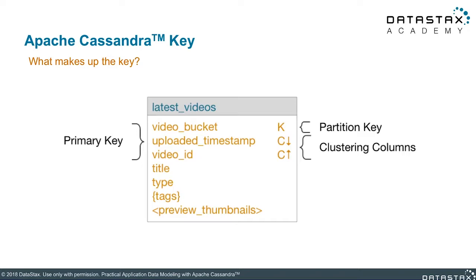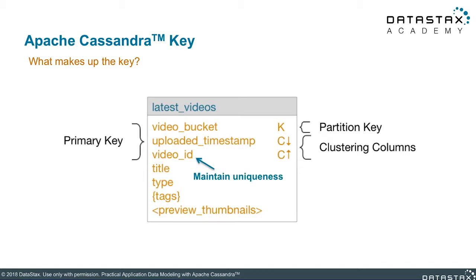For our latest video's table here, we are interested in having rows ordered by the timestamp when a video is uploaded, but in descending order. The primary key still needs to be able to maintain uniqueness using a minimum number of columns, which is why the video ID is included in the primary key, although it's placed at the very end.